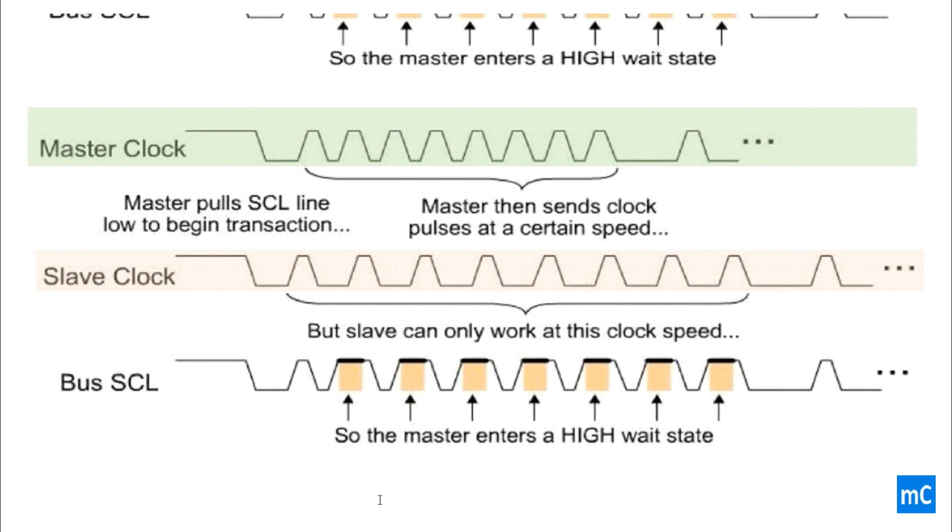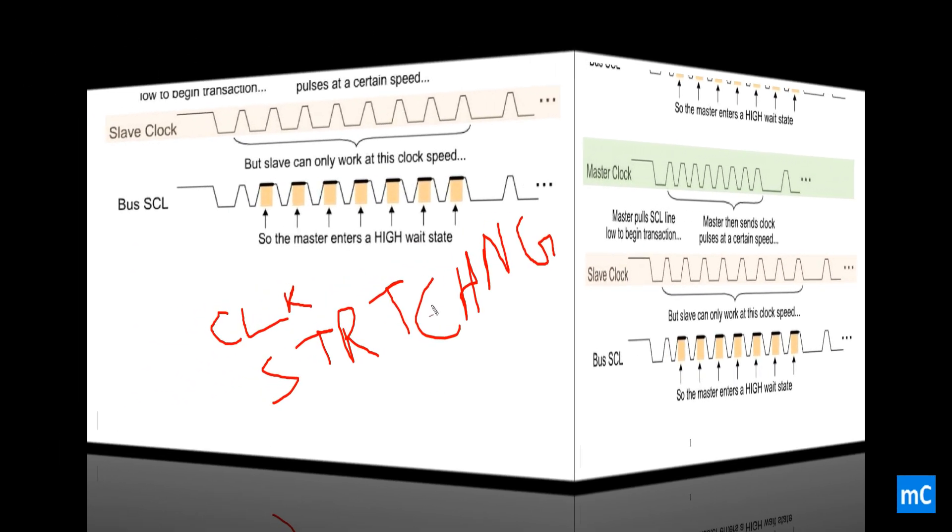So, as long as the slave is doing its operation, the master cannot pull the line high.